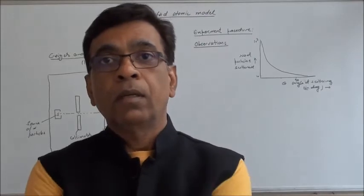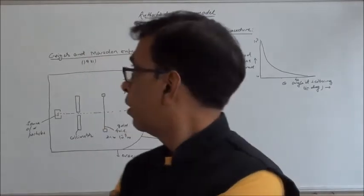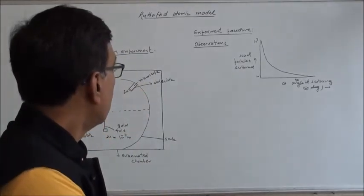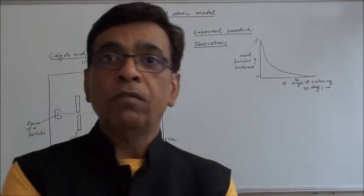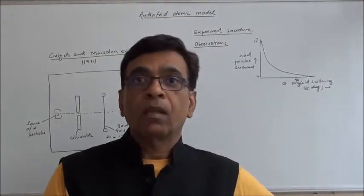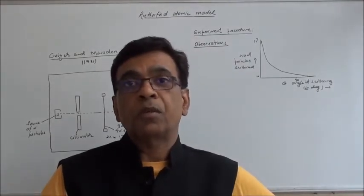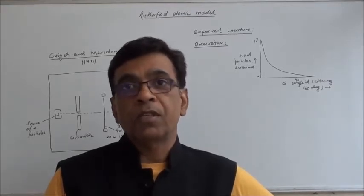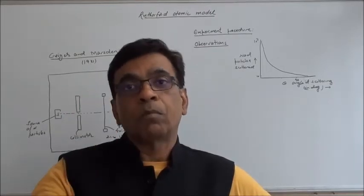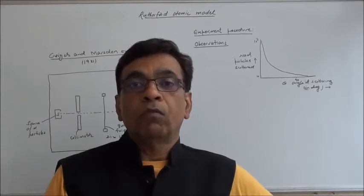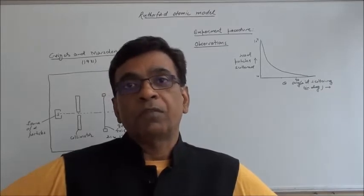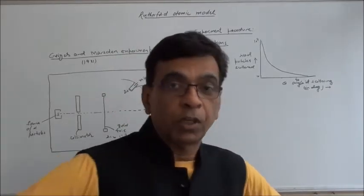Hello everyone, let's cover Rutherford's atomic model in this class. The first atomic model we are aware of was Thomson's model, which told that the entire positive charge is distributed in a sphere of atomic dimensions, and the negative charge is embedded in such a way that attractive and repulsive forces are somehow balanced. One very important point of this model was that the atom is neutral, so positive and negative charges are equal — this point is still valid.